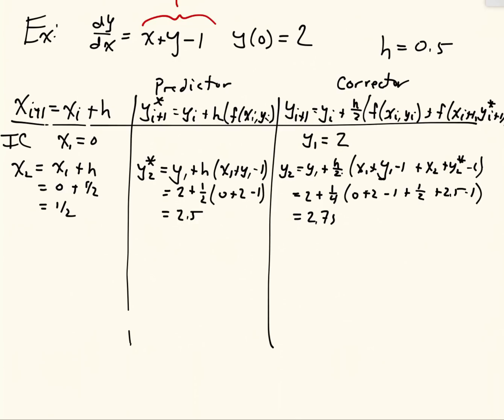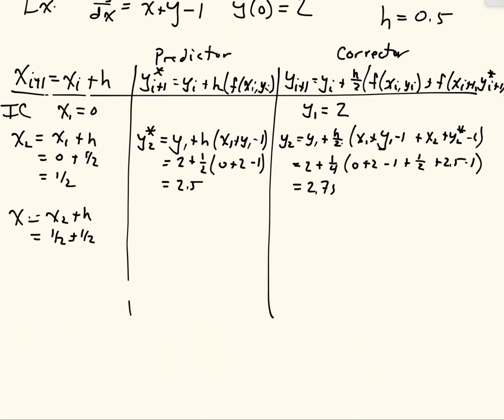Okay, so we've just computed the second step in our solution. So let's do one more step. x_3 equals x_2 plus h, which is a half plus a half, which equals 1. y_3 star equals y_2 plus h times x_2 plus y_2 minus 1, where y_2 is 2.75, plus h is a half, x_2 was a half, y_2 is 2.75 minus 1.